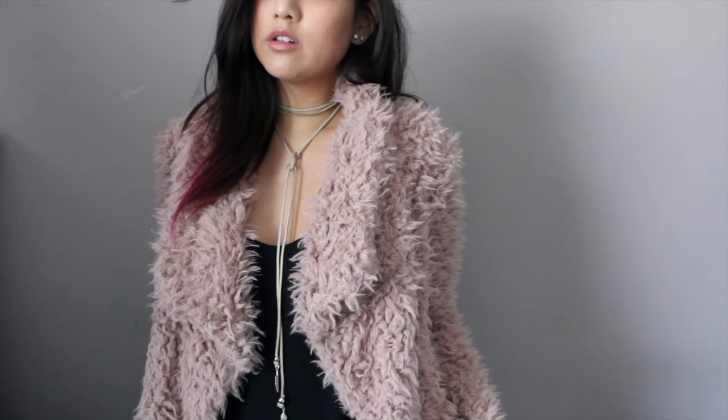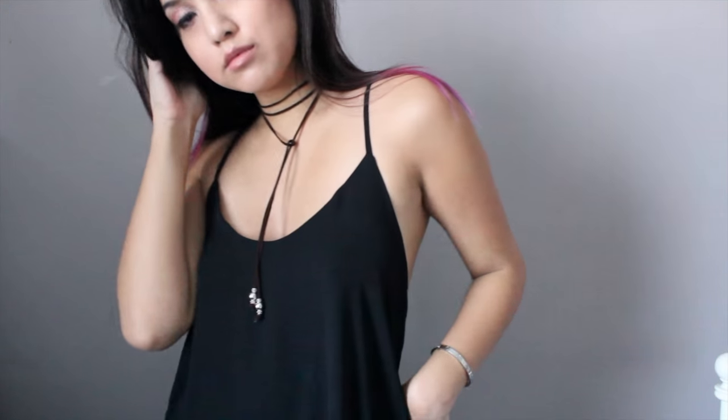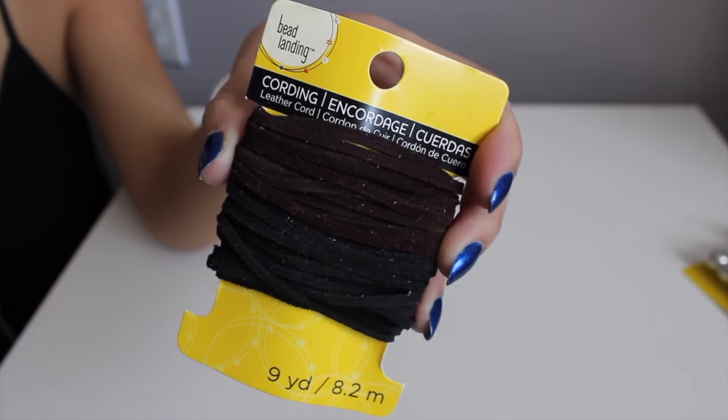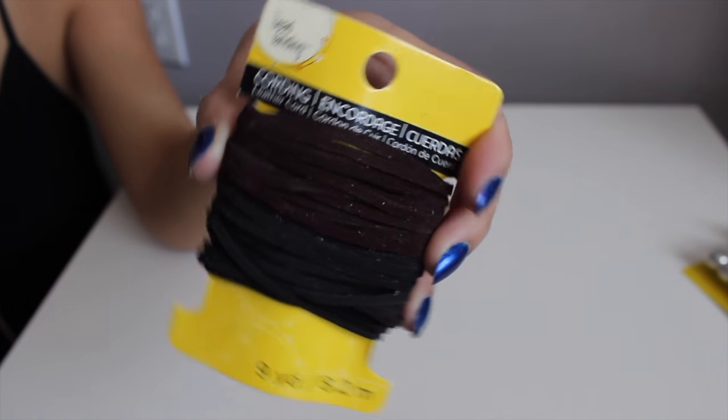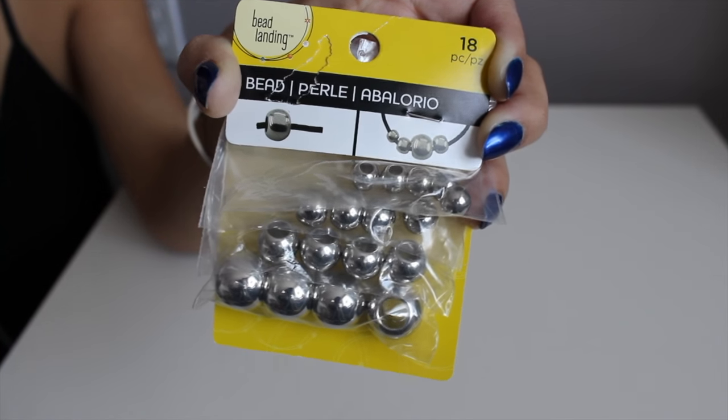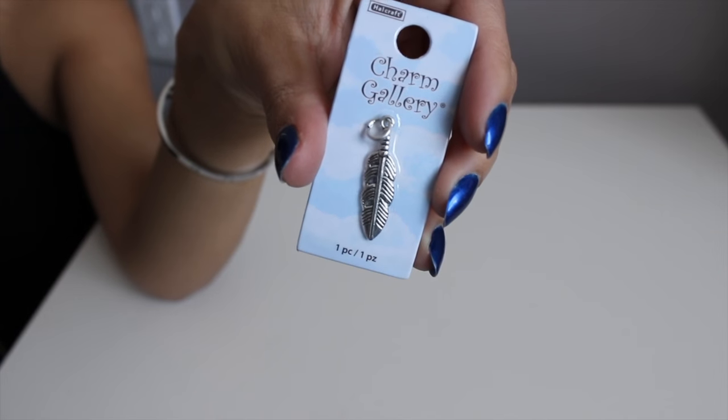Hey guys, it's Danica, and today I'm going to show you how I made these DIY suede wrap choker necklaces. So let's get started. What you're going to need is some suede leather cord - I have this variety pack that comes in three colors - some silver or gold beads, whatever color you prefer, two feather charms or whatever design charms that you like.